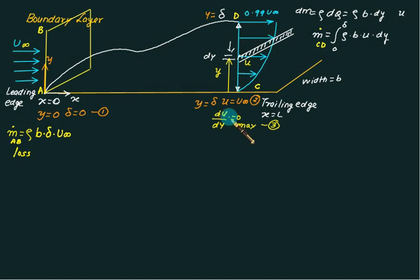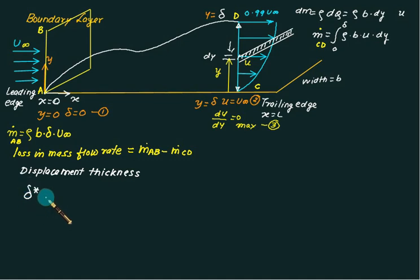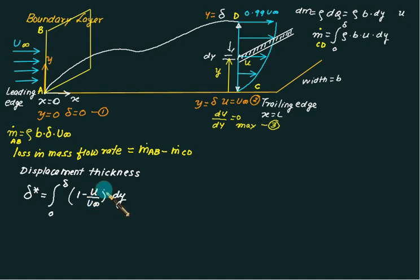The loss in mass, m-dot AB minus m-dot CD, is called the mass defect. This defect is adjusted by shifting the boundary layer by a certain thickness called the displacement thickness, delta-star, which is given as: delta-star equal to integral from 0 to delta of (1 minus u upon u-infinity) dy.